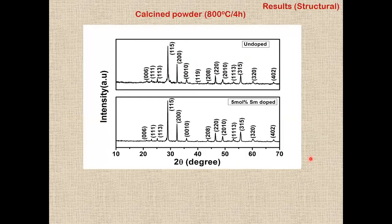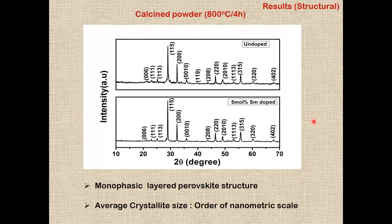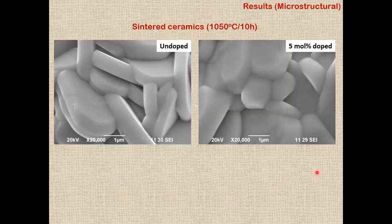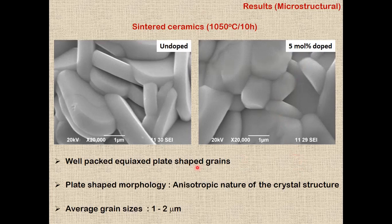The X-ray diffraction patterns recorded for undoped as well as samarium-doped strontium bismuth tantalate ceramics clearly reveal the presence of a monophasic layered perovskite structure. The scanning electron micrographs recorded for undoped and 5 mol% samarium-doped strontium bismuth tantalate ceramics clearly reveal the presence of plate-shaped grains, and the average grain size is found to be in the range of 1 to 2 micrometers.